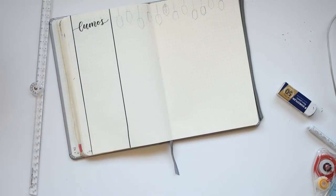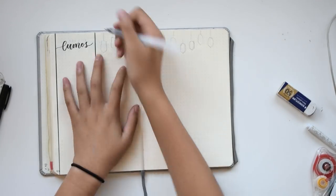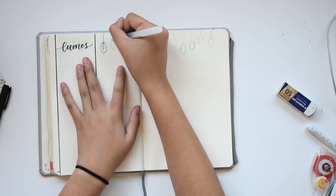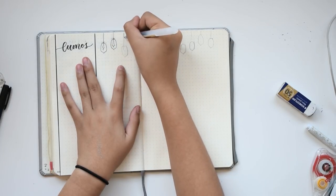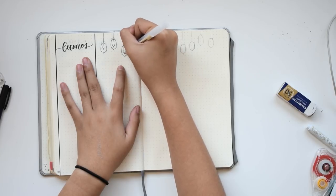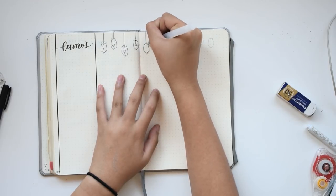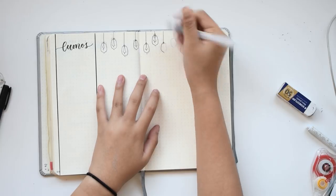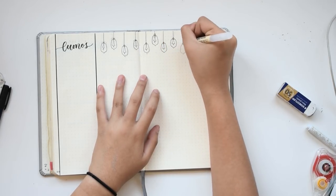Now I've moved on to a weekly spread, and this is for the first week of November. So this week has some lantern doodles along the top, and it also says Lumos, which is the Harry Potter spell for making a light from your wand. Most of the titles for this month's spreads are Harry Potter-related quotes that are related to light or light bulbs.